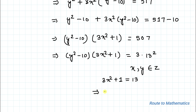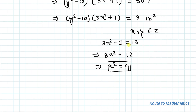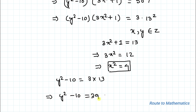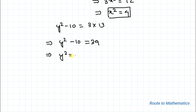So let's take 3x² + 1 = 13. This implies 3x² = 12, which gives x² = 4. If 3x² + 1 = 13, then y² − 10 = 3 × 13 = 39, which implies y² = 49.